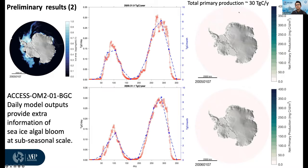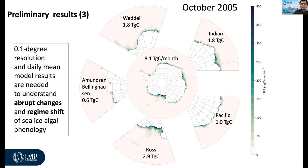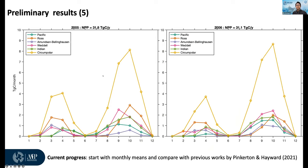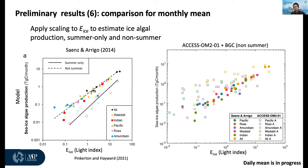Comparing with Pinkerton and Hayward's approach using monthly means for 2005 and 2006, the results overlap but with some spread, especially at low light index values. For months outside of summer, there is good agreement with the previous approach. However, for summer months, there is a discrepancy because the current model only has bottom ice algae and lacks the surface community, which is something to investigate further.